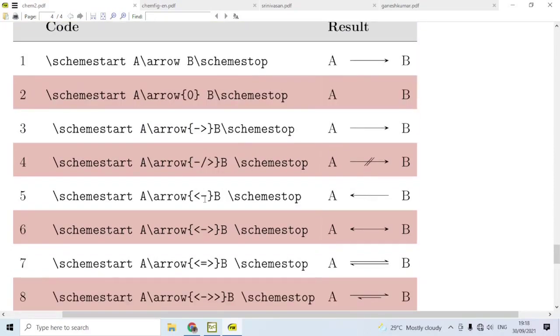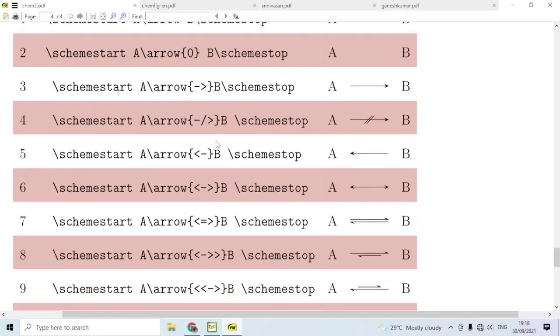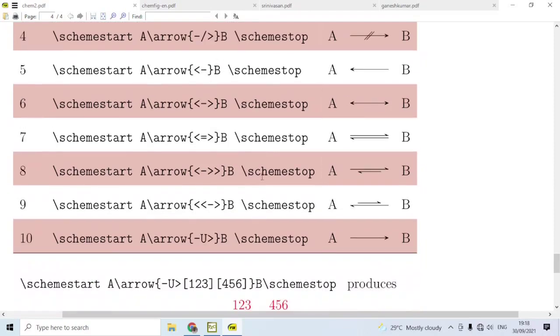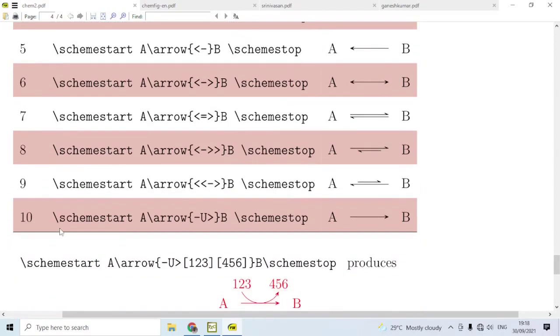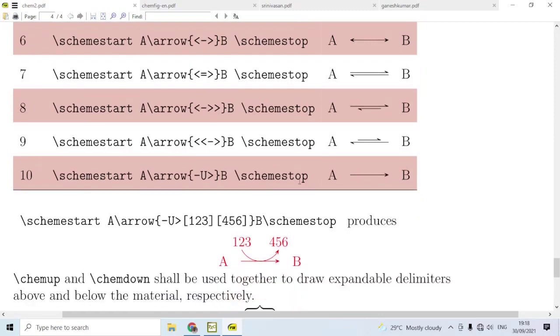Other types of arrows are also possible as shown here. Some of these arrows are also available in chemformula package. In particular, refer to line 10: arrow hyphen capital U greater than B. Then this produces a special type of arrow which is not immediately visible in the output on the right hand side.